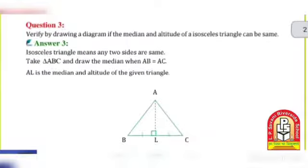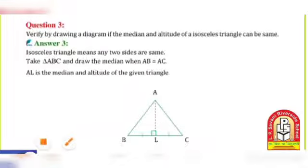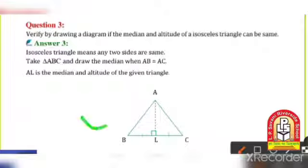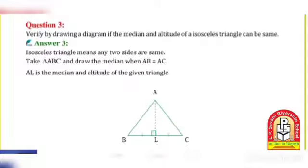In Question No. 3: Verify by drawing a diagram if the median and altitude of an isosceles triangle can be the same. Here we have to draw the triangle which has the same altitude and is also isosceles. Isosceles triangle means two sides are the same — here AB and AC are the same. And AL is both the median and the altitude of the given triangle.